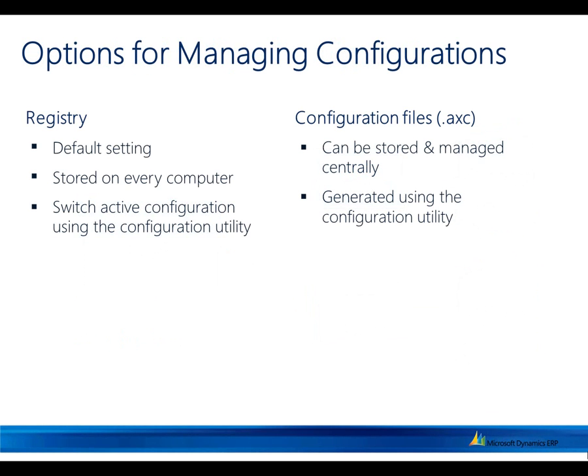When it comes to managing configurations, there are two different ways that the Microsoft Dynamics AX configuration utility saves its configurations. The first option is saving the configuration in the registry. This is the default setting when the client is installed, and since it's in the registry, it's going to be stored on every computer individually. This means that if you are managing multiple client installations across an enterprise, you would have to manage that configuration across every one of those computers.